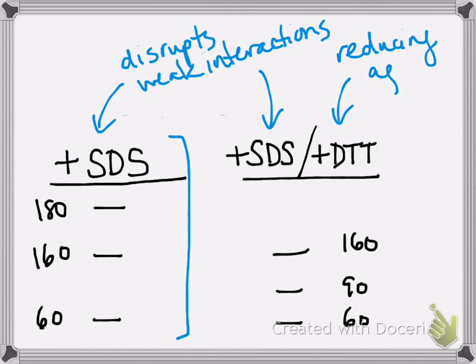DTT is a reducing agent. What does that mean? It means disulfide bonds between cysteine residues get disrupted because the sulfurs are reduced and those disulfide bonds break. So if two subunits were held together by a disulfide bond, they would no longer be held together because of the DTT.